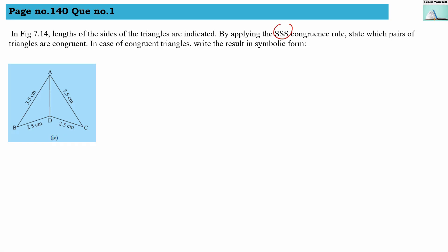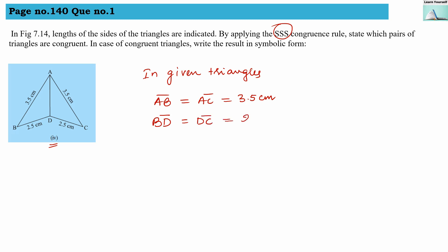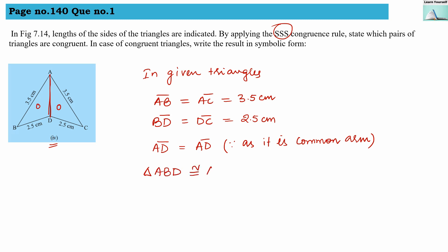Fourth numerical — proving SSS congruence rule. AB equals AC as they both measure 3.5 cm. BD equals DC as they both measure 2.5 cm. AD is not given, but AD is a common arm between both triangles, so AD equals AD. Since all three sides are equal, triangle ABD is congruent with triangle ADC as per SSS criteria.